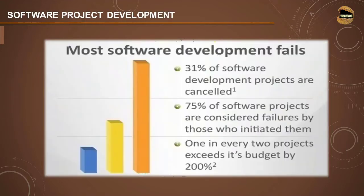Statistics show that most software development failed due to traditional approaches: 31% of software development projects are cancelled because they were not meeting customer requirements or expectations. In fact, 75% of software projects are considered failures by those who initiated them, due to poor collaboration and unclear direction. One in every two projects exceeds its budget by 200%, showing poorly planned and poorly designed execution.